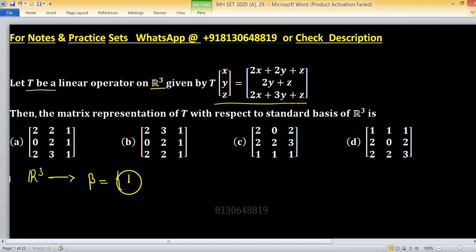by beta is (1,0,0), this is first element, second element is (0,1,0), third element is (0,0,1).